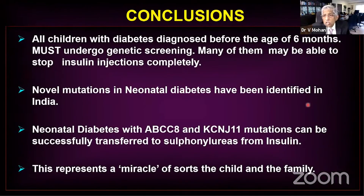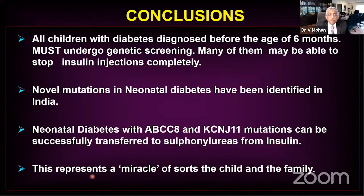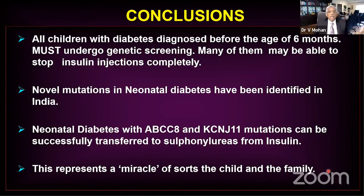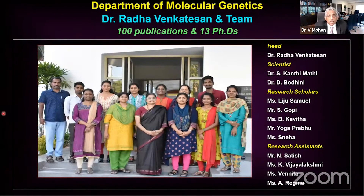To conclude: all children with diabetes diagnosed before six months of age must undergo genetic testing. Many of them may be able to stop insulin injections. Earlier we had to send blood samples to Exeter, UK, to Dr. Andrew Hattersley — today we can do it in India, free of cost. Novel mutations in neonatal diabetes are being identified in India. Children with ABCC8 and KCNJ11 mutations can be successfully transferred from insulin to sulfonylurea — this represents a miracle for these children. This is the greatest miracle in diabetes I have experienced in my life.